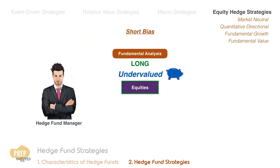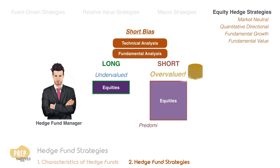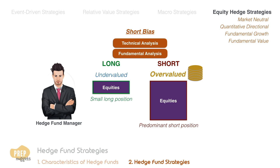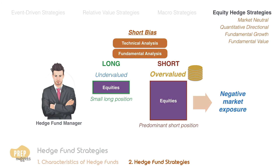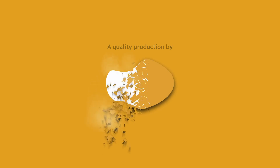Conversely, short bias is the strategy of using technical or fundamental analysis to take predominantly short positions in overvalued equities. The hedge fund may possibly enter into smaller long positions, but the market exposure is overall negative. And that concludes the four major categories of hedge fund strategies.